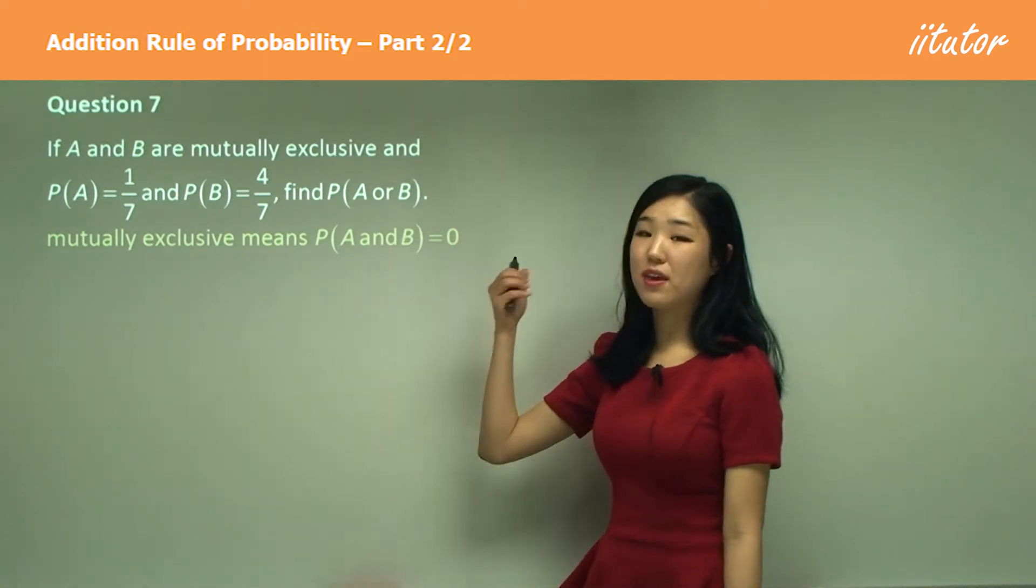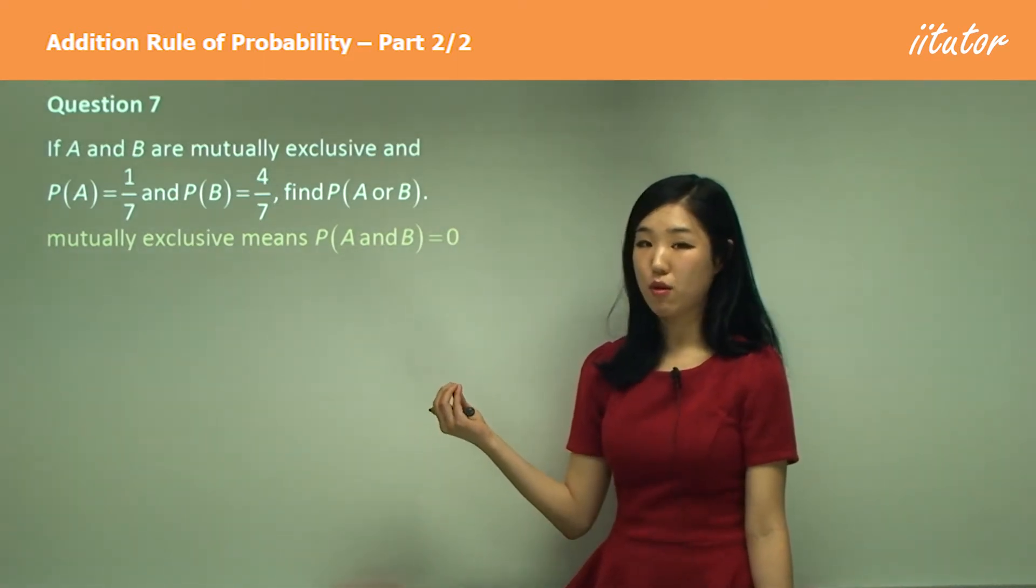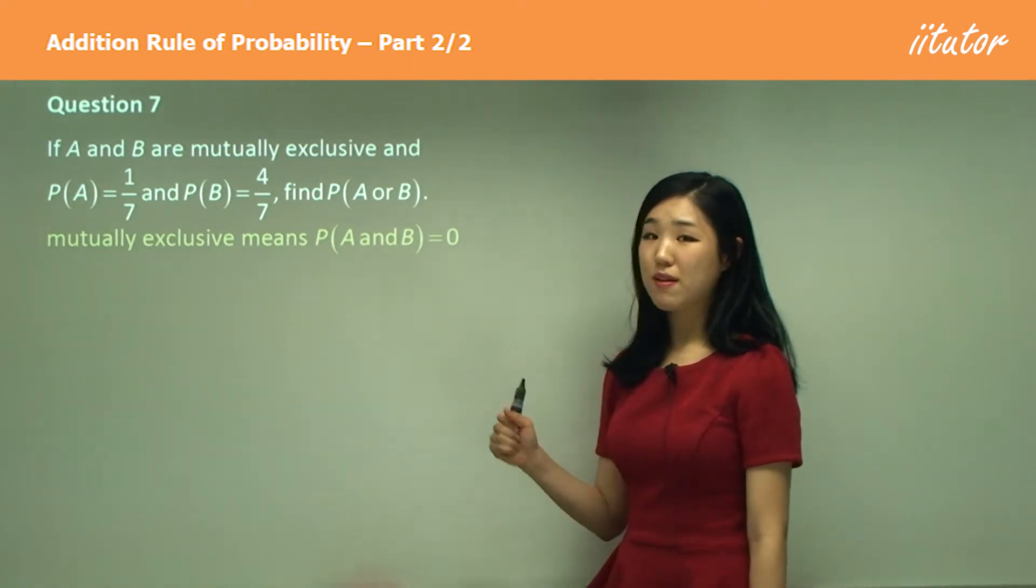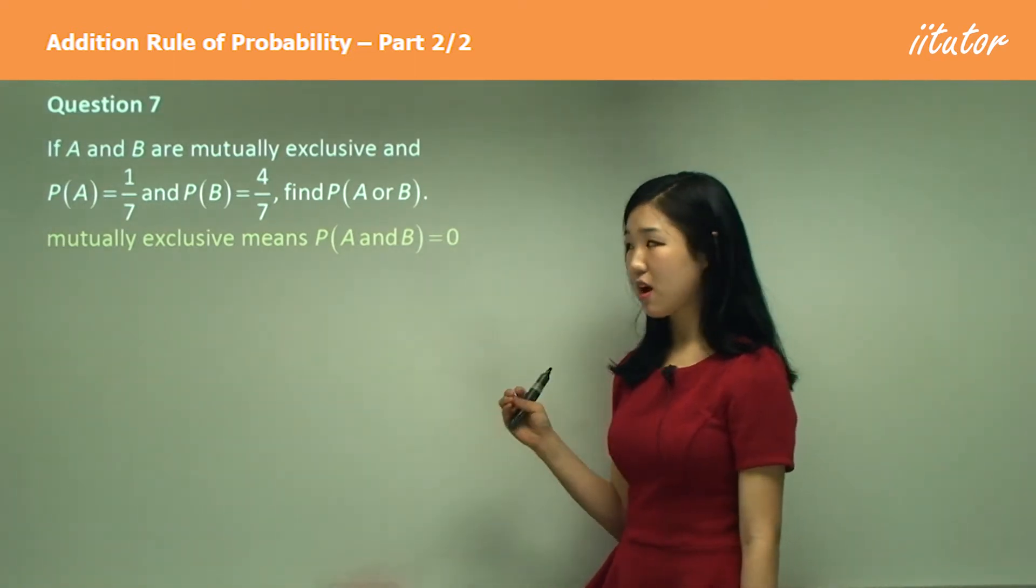So that's why the probability of A and B is zero. We don't have a probability for it because it can never happen. That's what mutually exclusive means. So make sure you remember what that means because it comes out a lot.